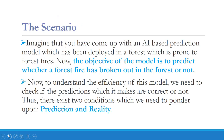Let us see one scenario where we come across how our AI model will work based on prediction and reality. Imagine that you have come up with an AI-based prediction model which has been deployed in a forest prone to forest fires. The objective of the model is to predict whether a forest fire has broken out in the forest or not — our AI model has to detect whether there is a forest fire or not.